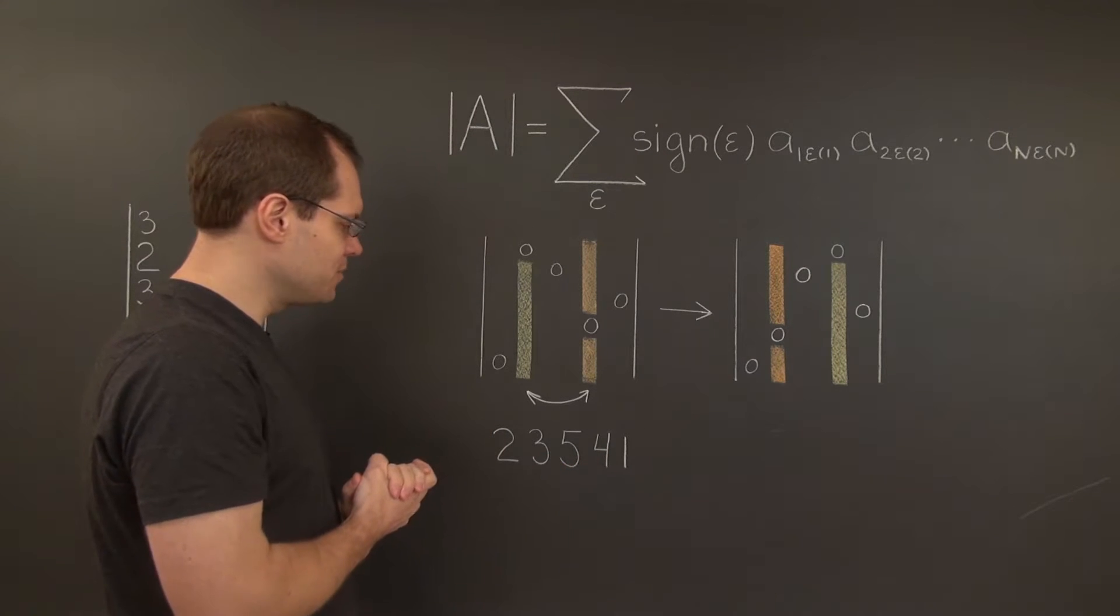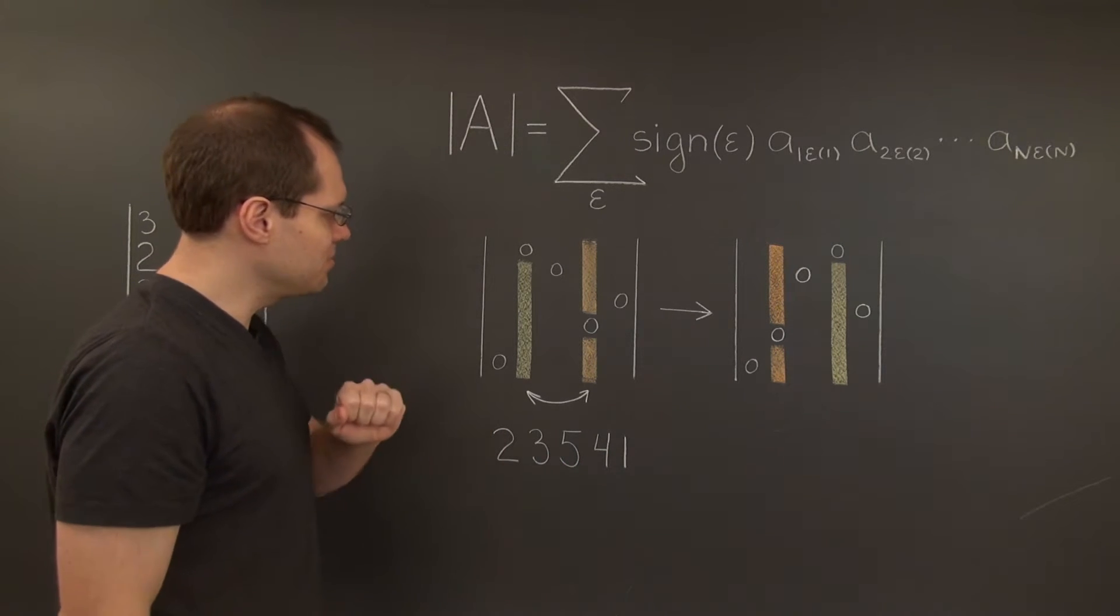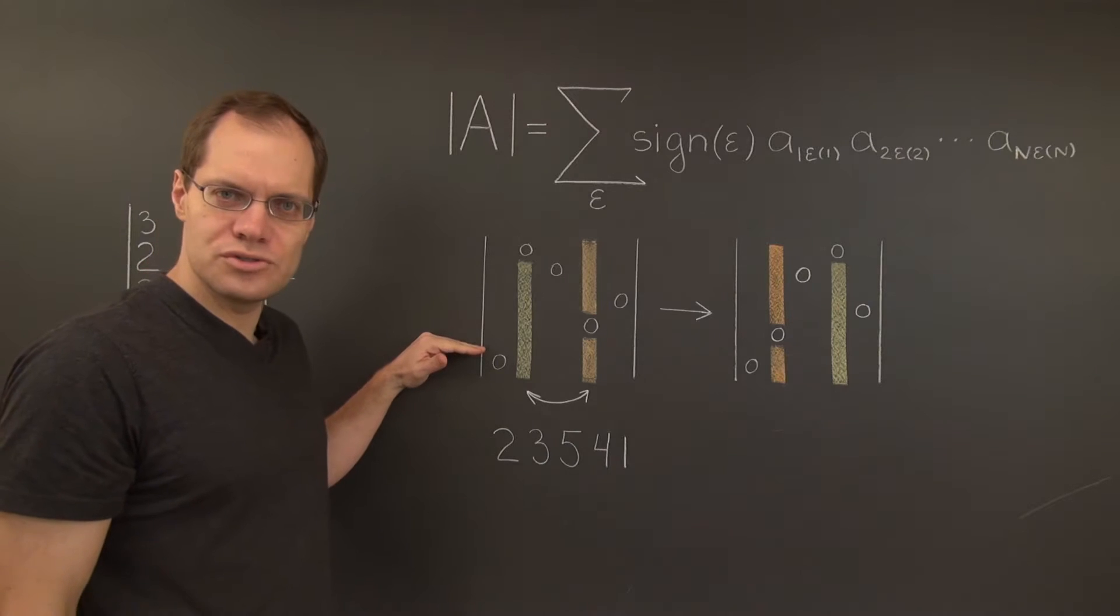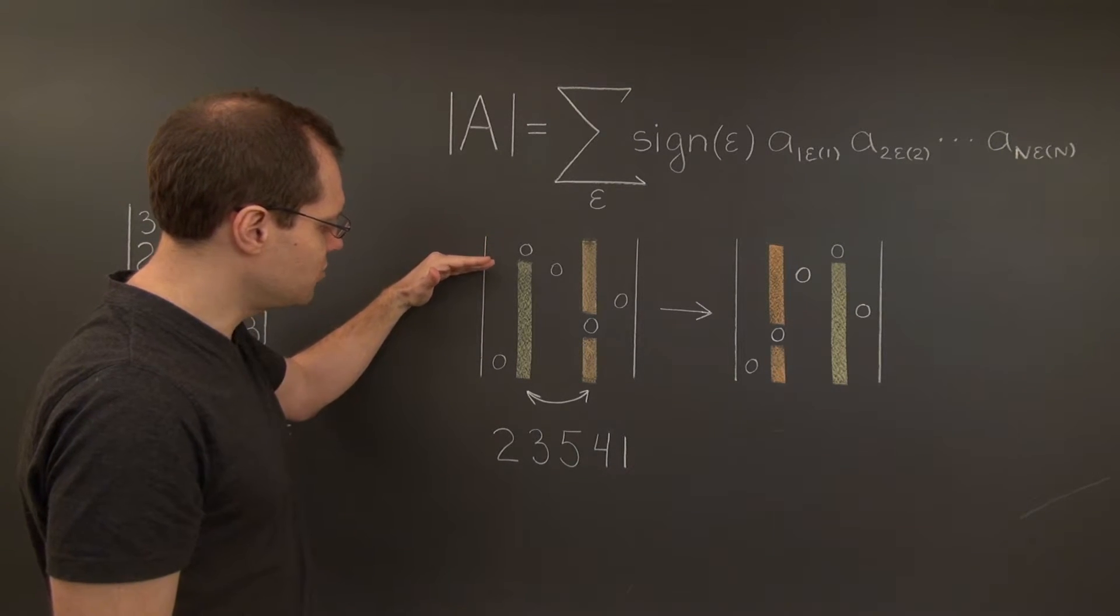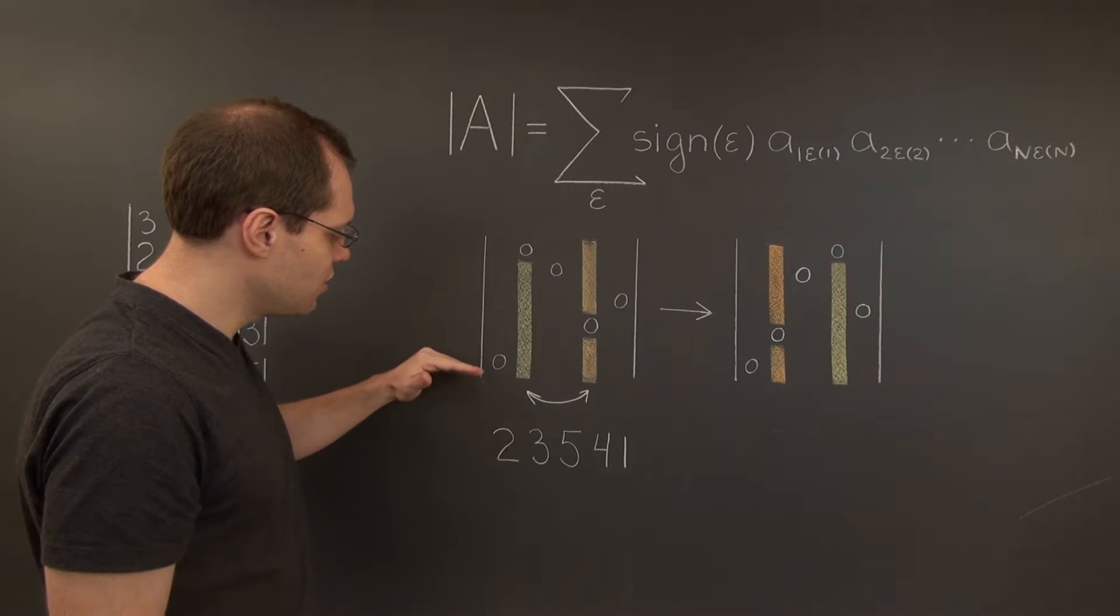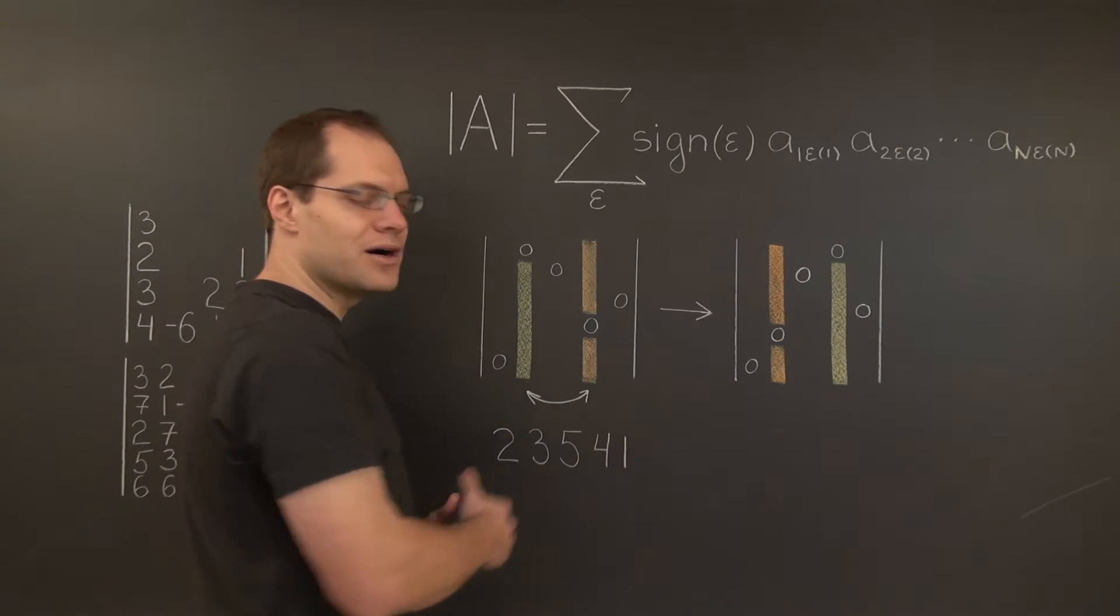And we're familiar with this permutation. Let me remind you, we have to march down the rows and name the columns. And so it becomes 2, 3, 5, 4, 1.